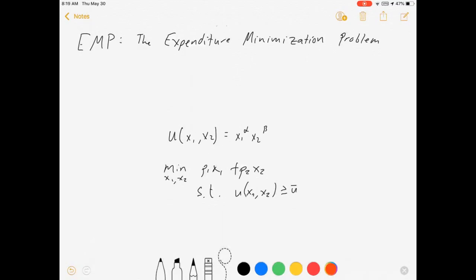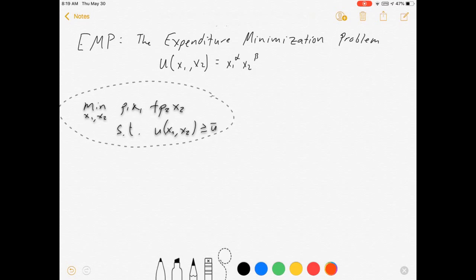Instead of trying to maximize utility subject to a budget constraint, we are still going to have a utility function, which I have chosen for this example to be Cobb-Douglas. But instead of maximizing utility, our goal is to minimize expenditures P1X1 plus P2X2, subject to a constraint where we keep utility greater than some fixed level. So we are trying to maintain some level of utility while minimizing expenses as much as possible.